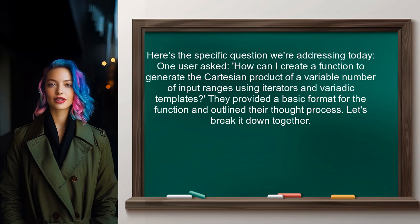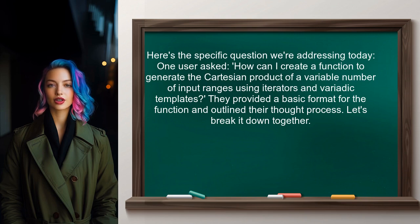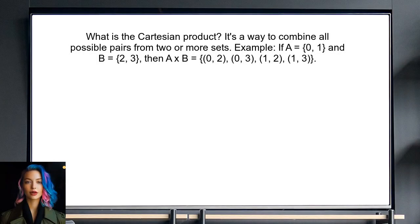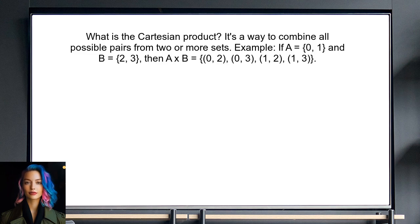They provided a basic format for the function and outlined their thought process. Let's break it down together. So what exactly is the Cartesian product? In simple terms, it's a way to combine all possible pairs from two or more sets. For example, if you have two sets A and B, the Cartesian product A×B gives you all combinations of elements from both sets. Understanding this concept is crucial as we dive into the implementation.